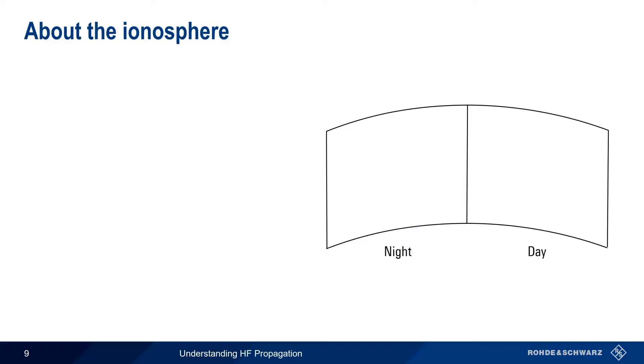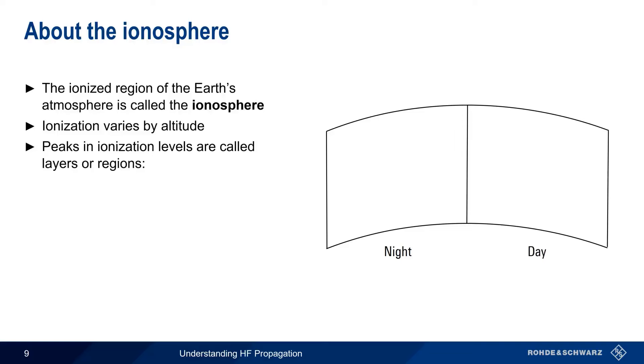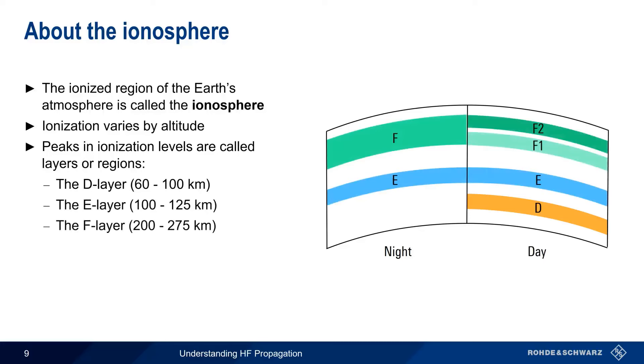As mentioned earlier, the region of the Earth's atmosphere that undergoes this ionization is collectively called the ionosphere. The level or density of ionization in the ionosphere is different at different altitudes, and areas with ionization peaks are often grouped into so-called layers or regions. The layers that are important for HF propagation are the D layer, from 60 to 100 kilometers, the E layer, from 100 to 125 kilometers, and the F layer, or layers, from about 200 to 275 kilometers. Note that these are only rough numbers. The thickness and altitude of ionospheric layers is never constant.